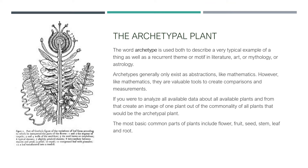I want to start by looking at the archetypal plant. The word 'archetype' describes a very typical example of a thing, as well as a recurrent theme or motif in literature, art, mythology, or astrology. For folks working with astrology and plants, this is really interesting, because planetary archetypes can also be seen active in plants. Archetypes generally exist only as abstractions — like mathematics — which doesn't exist anywhere but exists everywhere. Yet like mathematics, they're valuable tools to create comparisons and measurements.